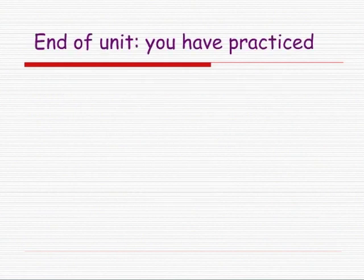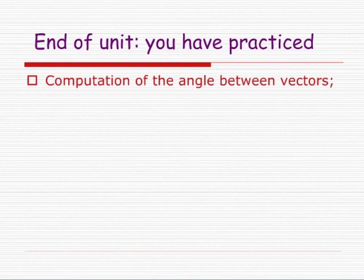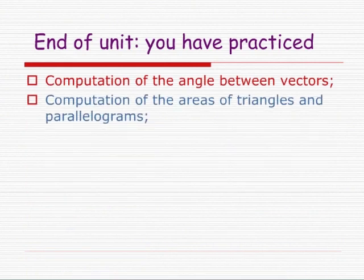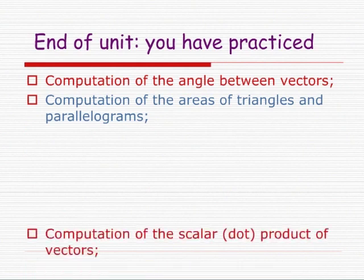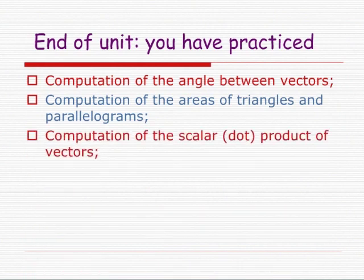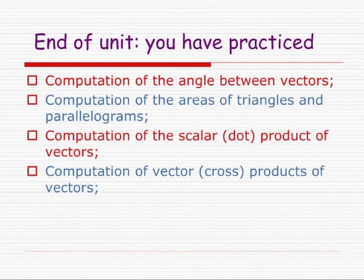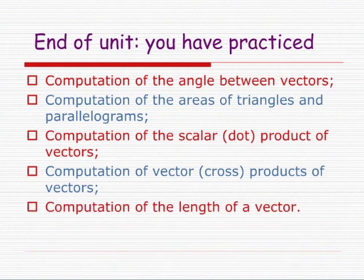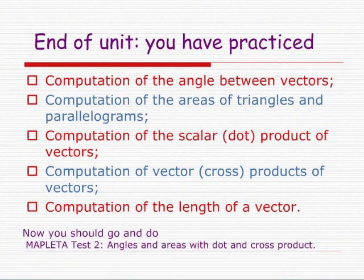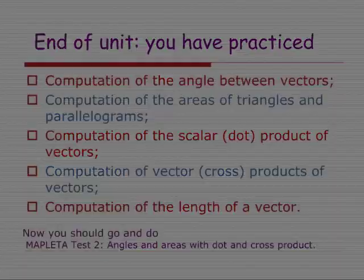You have reached the end of this unit. Well done. You have practiced the computation of angle between vectors, the computation of areas of triangles and parallelograms, the computation of scalar and dot products of vectors, the computation of vector or cross product of vectors, and the computation of the length of a vector. Now you should go and do the second Maple TA test: angles and areas with dot and cross products.